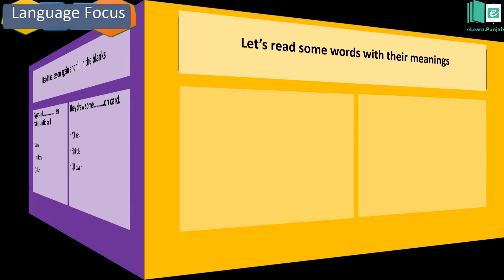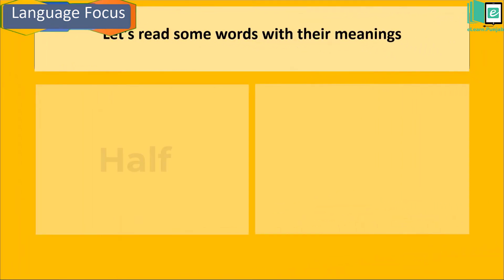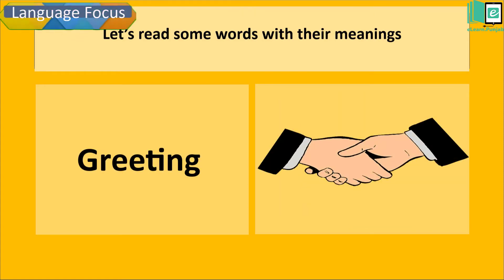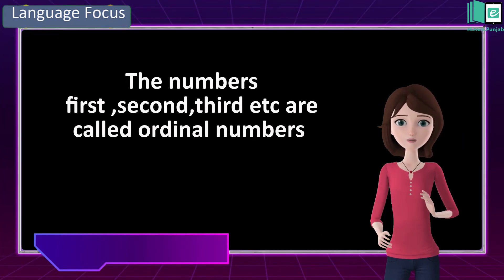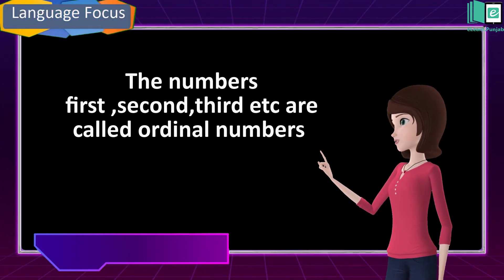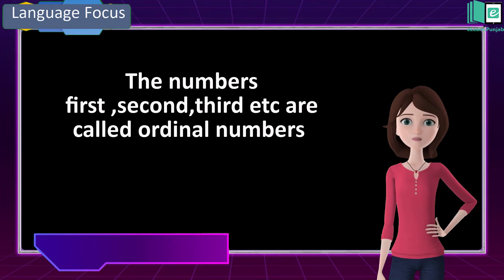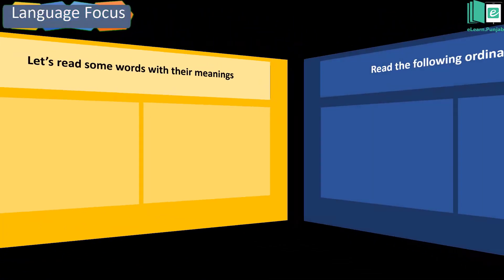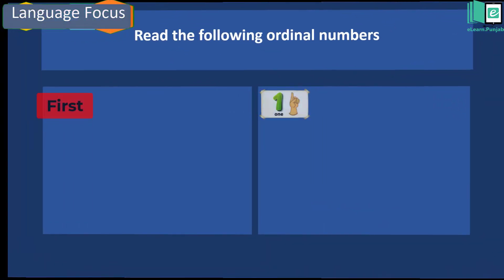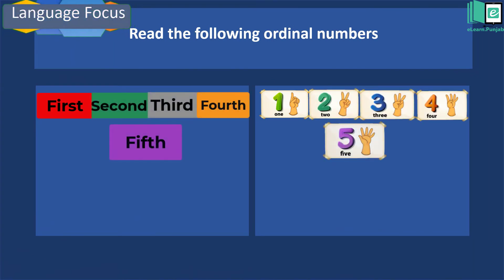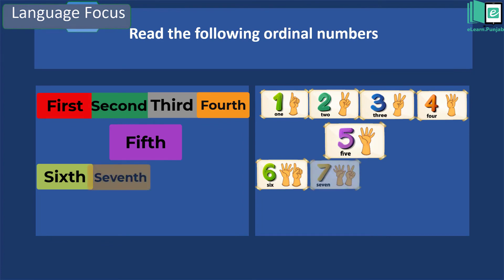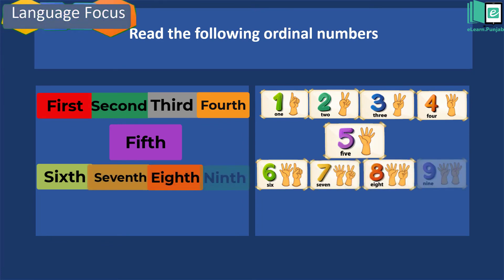Language focus. Kids, let's read some words with their meanings. Half: meaning is two equal parts. Greeting: a message of good wishes. Kids, the numbers first, second, third, etc. are called ordinal numbers, means the order of things. Read the following ordinal numbers: first, second, third, fourth, fifth, sixth, seventh, eighth, ninth, tenth.